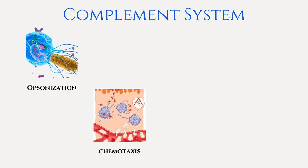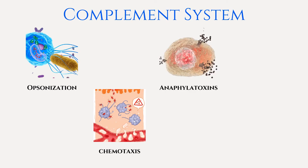Complement proteins C3A and C5A play an important role in chemotaxis, which means they attract phagocytes to the site of inflammation. C5A is the more potent chemoattractant. C3A and C5A are also anaphylatoxins and play a role in degranulating mast cells, which leads to the release of histamine, as you can see in the image. Histamine then causes vasodilation and increased capillary permeability, resulting in warmth and erythema at the inflamed site.